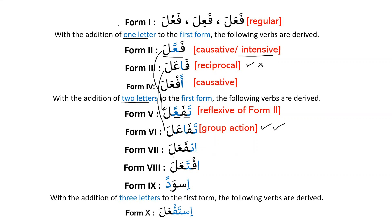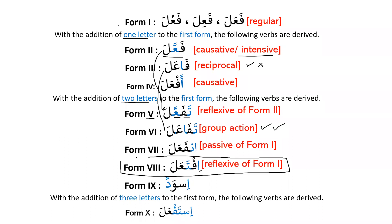Form 8 ifta'ala is reflexive of Form 1, similar to Form 5. Form 9 if'alla — iswadda — can be if'alla or if'alal, and it covers colors and defects. Form 10 istaf'ala, the last one we discussed today, is used for seeking something — to seek something or to ask something.